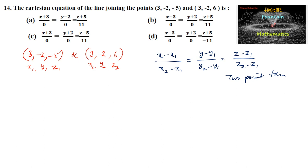So we can substitute here. Therefore, the required equation, that is the Cartesian equation of a line joining two points A and B, is given by